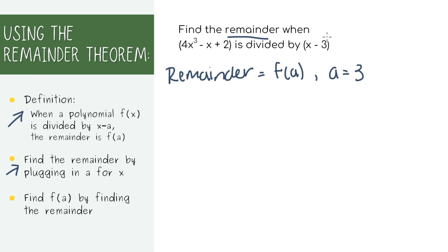So for this problem, plugging in 3 for all of the x's here, we'll get 107. So according to this theorem, this is actually our remainder and final answer. A lot quicker than doing long division.